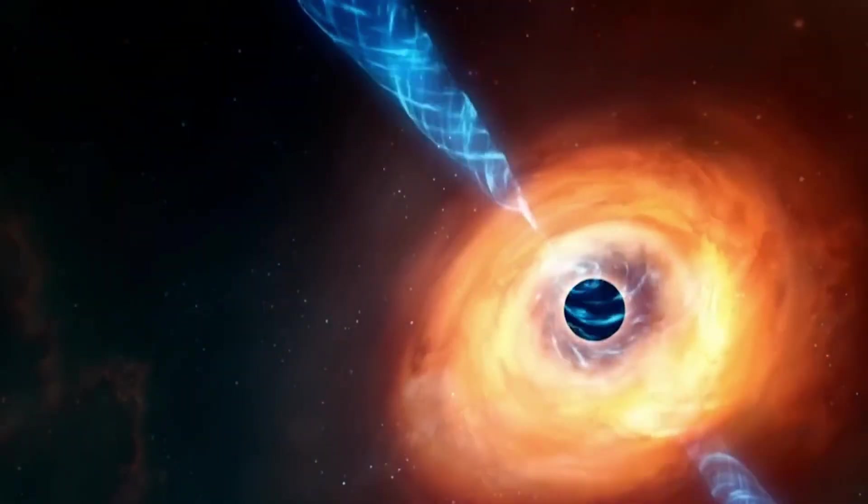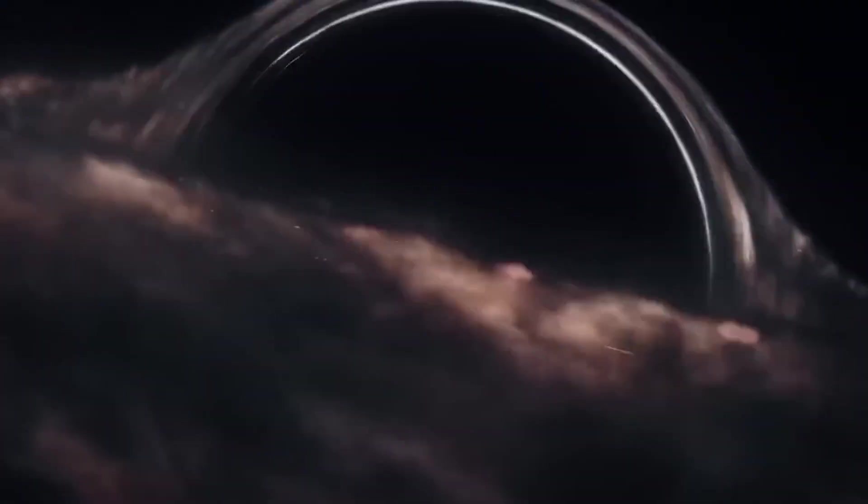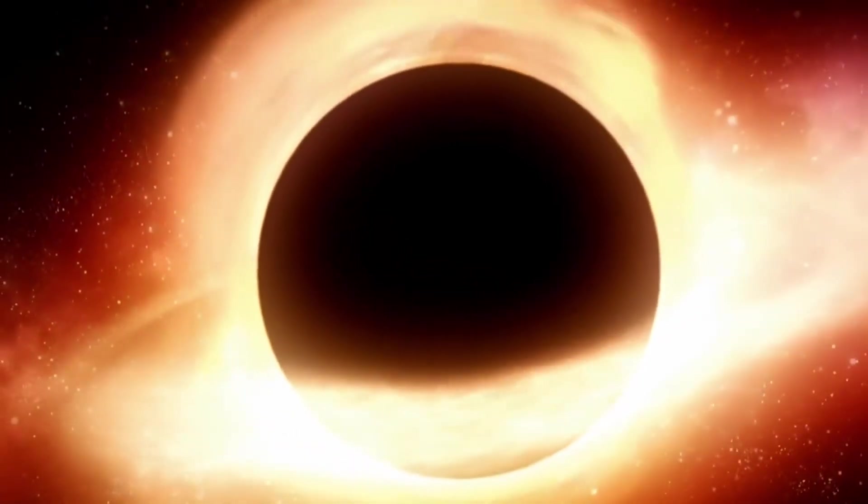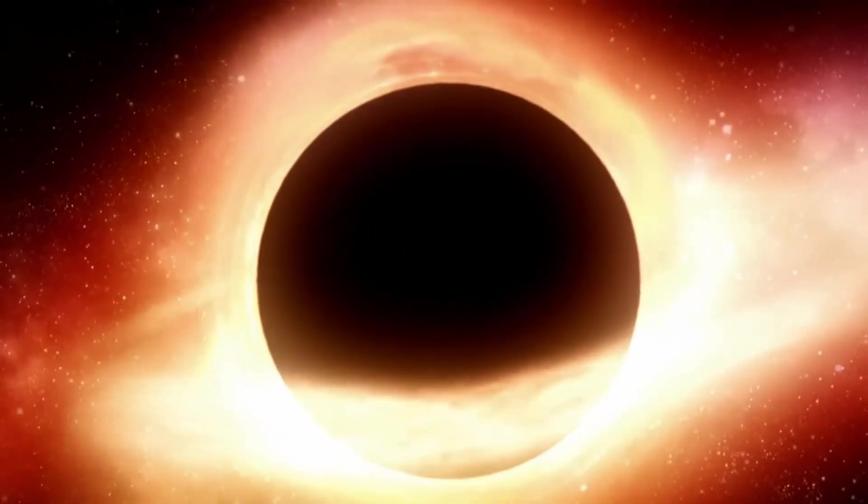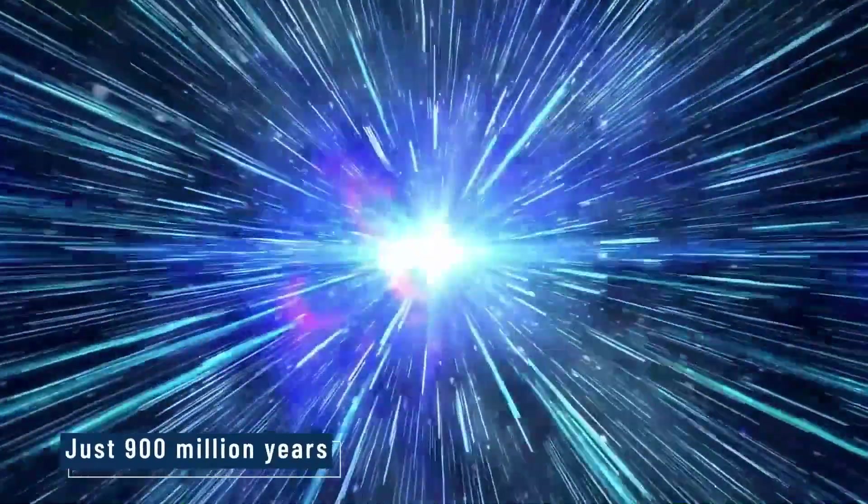We have also observed black holes in binary systems, which are pairs of stars where one of the companions is a black hole. These systems are incredibly valuable for studying black holes because we can carefully observe their gravitational effect on their visible companion star. The first black hole ever confirmed, Cygnus X-1, exists in such a pairing. We cannot see the black hole directly, but we know it is there because its immense gravity pulls matter off its partner star, heating it to extreme temperatures and causing it to glow intensely in X-rays.